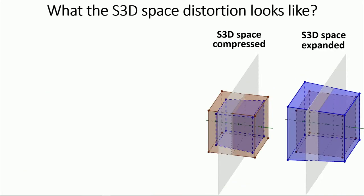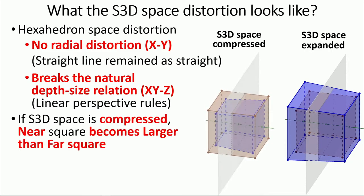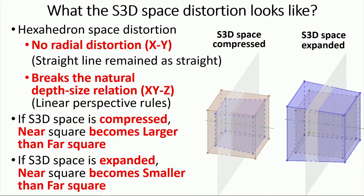The distortion is hexahedron-type space distortion, meaning that unlike the lens distortion, straight lines will remain straight. Also, the front and rear side rectangles remain as squares, and only the depth is affected, meaning that it breaks the natural depth-to-size relation. If you see it closely, you can notice that if the 3D space is compressed, the near front-facing square becomes larger than the far rear-facing square. And if the space is expanded, the far square becomes larger than the near square.